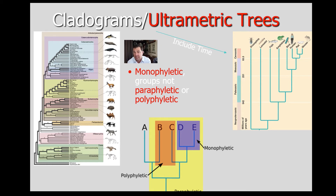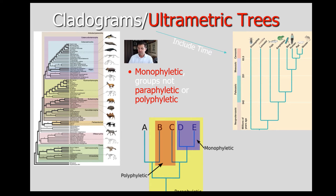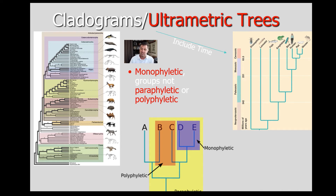When taxonomists use cladistics to form groups, they're very specific about calling a group only a group if it's what's called a monophyletic group. A monophyletic group includes the most recent common ancestor and all of its descendants. You can see D and E form a nice monophyletic group. In a polyphyletic group, B and C are related to one another but don't share the most recent common ancestor — they don't share a common ancestor between just the two of them.